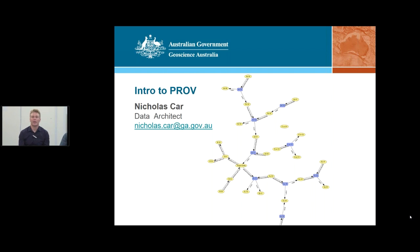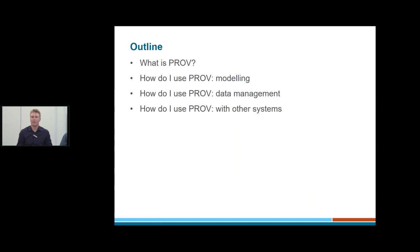This is a very quick introduction to PROV. PROV is a provenance standard. On the first slide is a simple diagram of a little provenance network, which I'll discuss as we go — it actually has some meaning. The outline for today: what is PROV, how do I actually use this thing, and I'll talk about modelling, managing the data once I've collected provenance data, and using PROV with other systems.